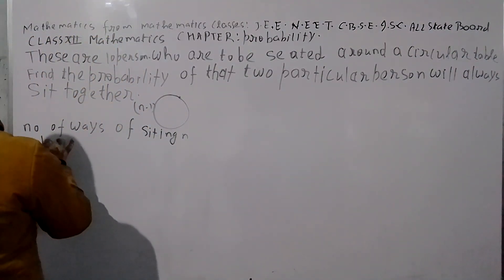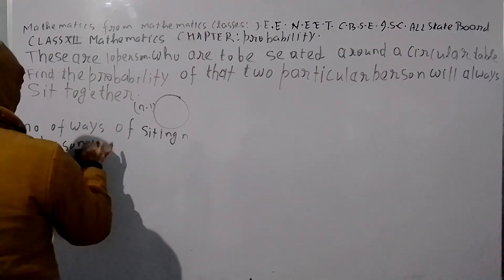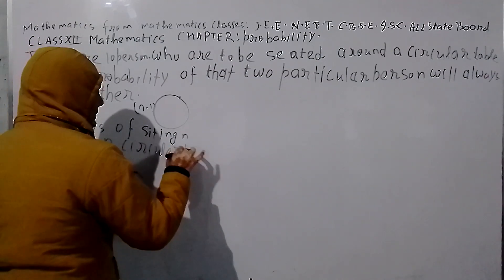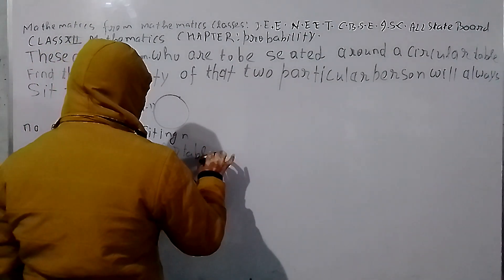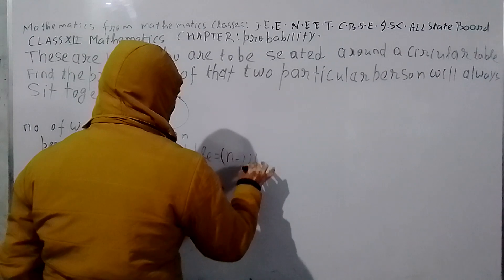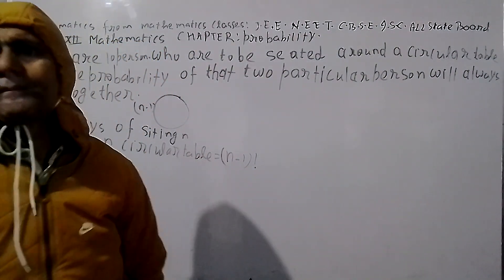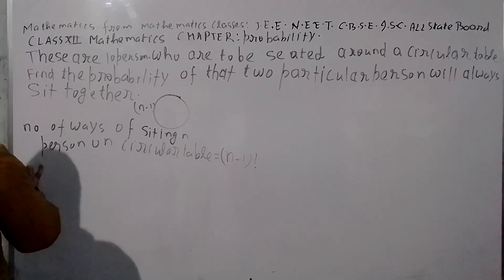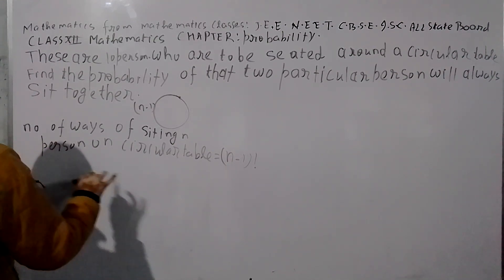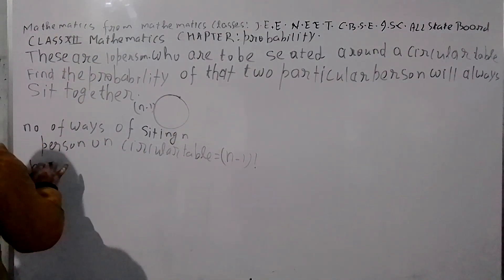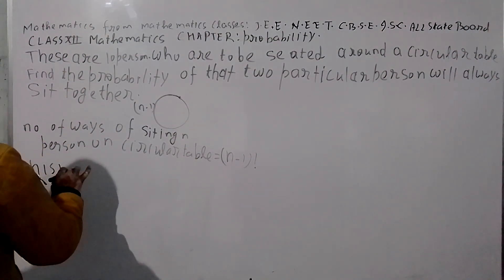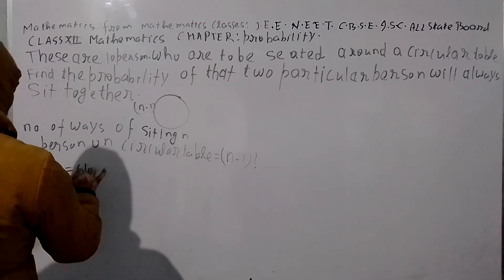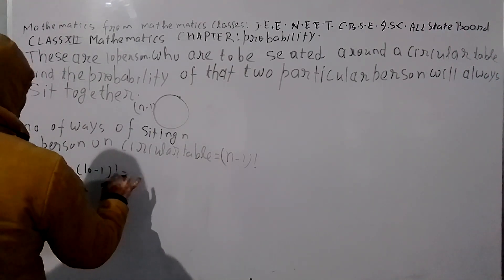So, n persons on a circular table. The number of ways of seating n persons on a circular table is (n-1) factorial. So, the number of ways of seating 10 persons on a circular table is (10-1) factorial, that is 9 factorial.